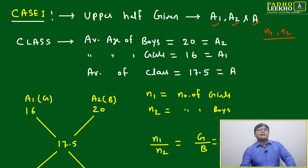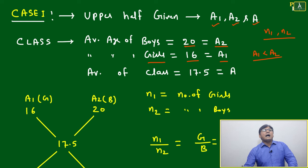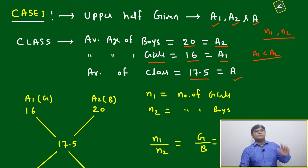One class is there. Average age of boys in that class is 20, that is a2. Average age of girls in same class is 16, that is a1. We have understood here a1 is less than a2, and average of class, that is total class, is 17.5, that is a. Means a1, a2, a - all three has given.